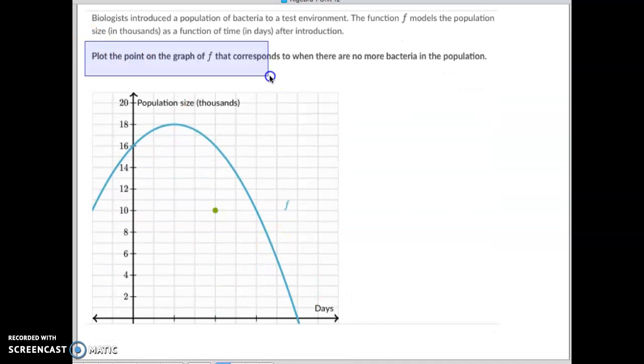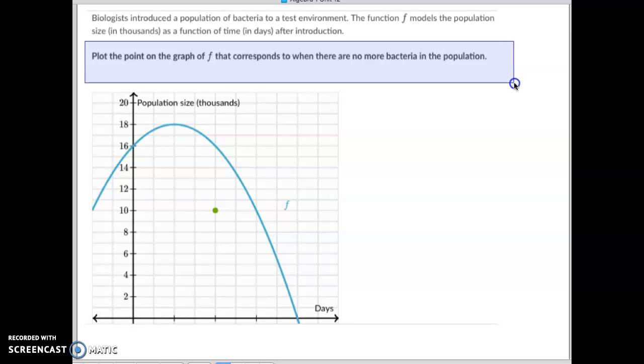Number two, again I'm not going to read that top part, I'm just going to read the question here. Plot the point on the graph that corresponds when there was no more bacteria in the population.